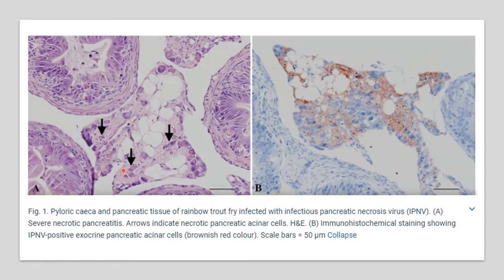In panel B, immunohistochemical staining shows IPNV-positive exocrine pancreatic acinar cells illustrated in a brownish-red color.